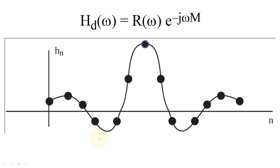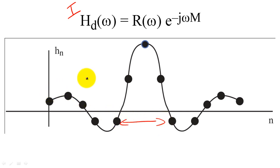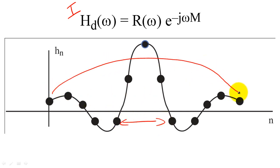To create a filter with generalized linear phase type 1, the filter coefficients must be evenly symmetric. For example, the first filter coefficient will be the same as the last coefficient, and so forth.